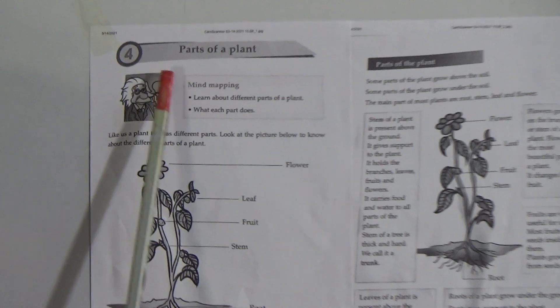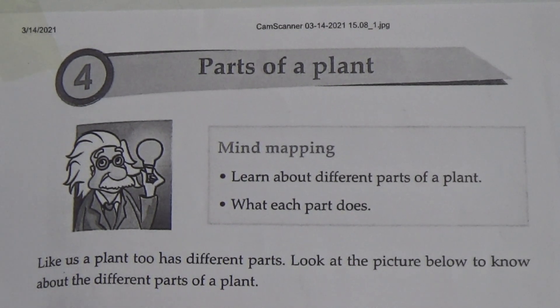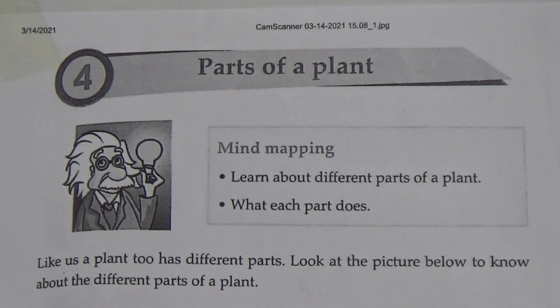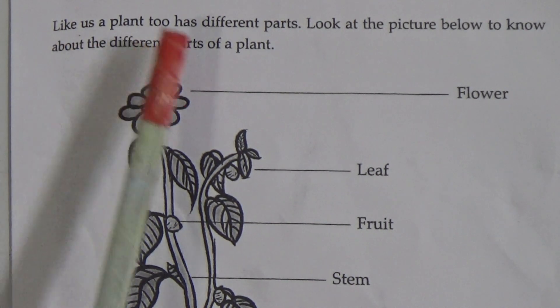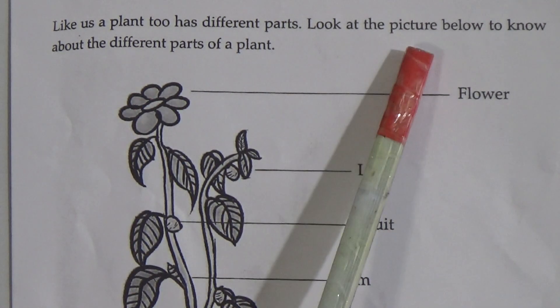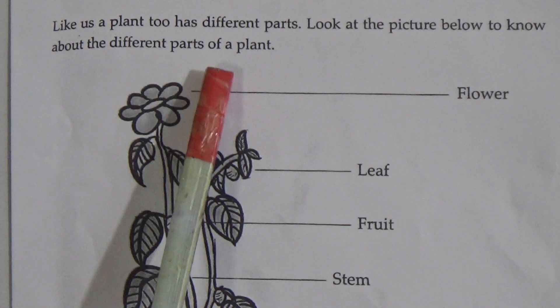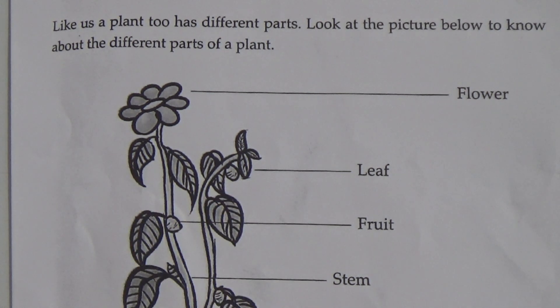Our today's topic is Chapter Four: Parts of a Plant. The page numbers are 27 to 29, lecture number seven, HFT number five. We will discuss the different parts of a plant and the functions of those parts. A plant has different parts, just like us. Look at the picture to know about the different parts of a plant.